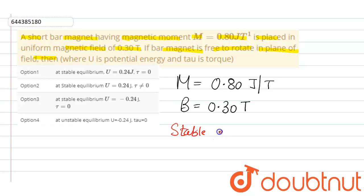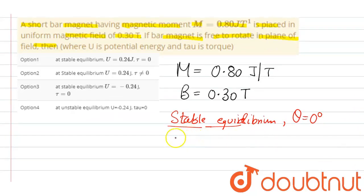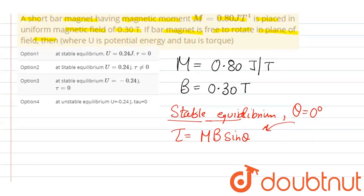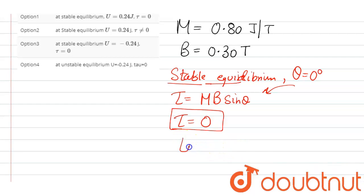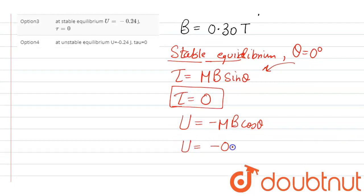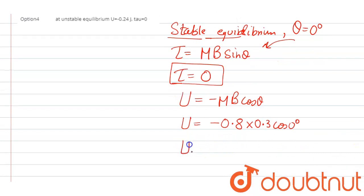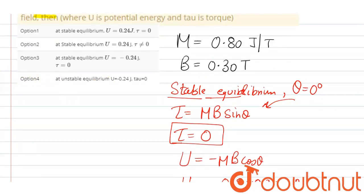For stable equilibrium, theta is equal to 0 degrees. So the torque, given by MB sinθ, if we put theta equals 0 degrees, the torque will be 0. The formula for potential energy is U equals minus MB cosθ. Putting in values: minus 0.8 into 0.3 into cos 0°. Since cos 0° is 1, the potential energy is minimum, that is minus 0.24 joules. That is for stable equilibrium.